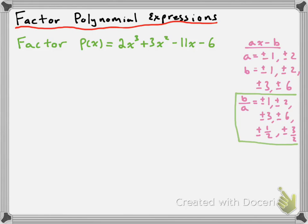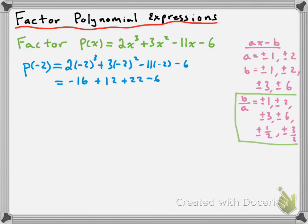Let's try the possible b/a value of −2 first. We check p(−2): substituting in, we get 2(−2)³ + 3(−2)² − 11(−2) − 6, which simplifies to −16 + 12 + 22 − 6, giving us +12. Since we did not get 0, the factor (x + 2) is not a factor of p(x).